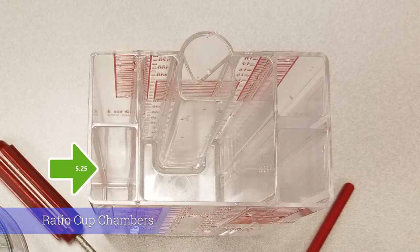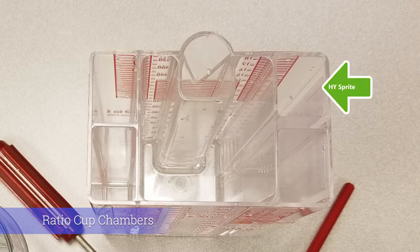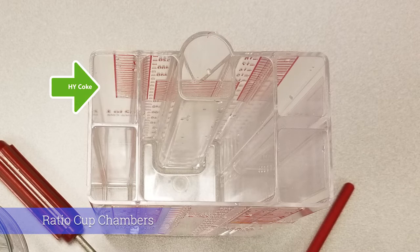It should have a 5.25 chamber for diet, a 4.75 chamber for sugar base, a high yield Sprite, a high yield Diet Coke, and a high yield Coca-Cola Classic. The large chamber in the middle is always for water.